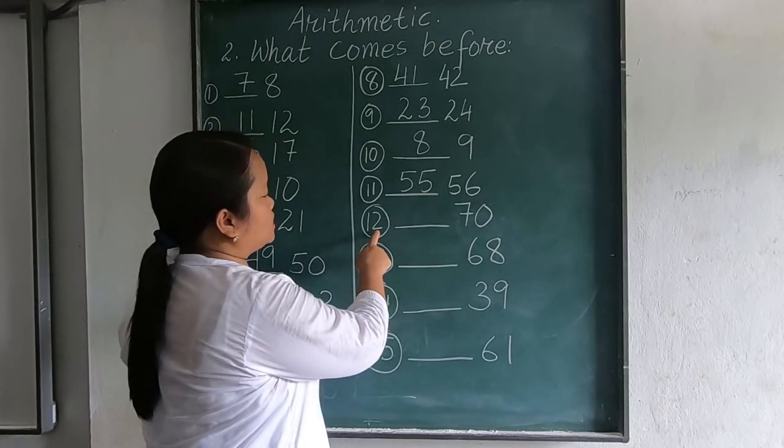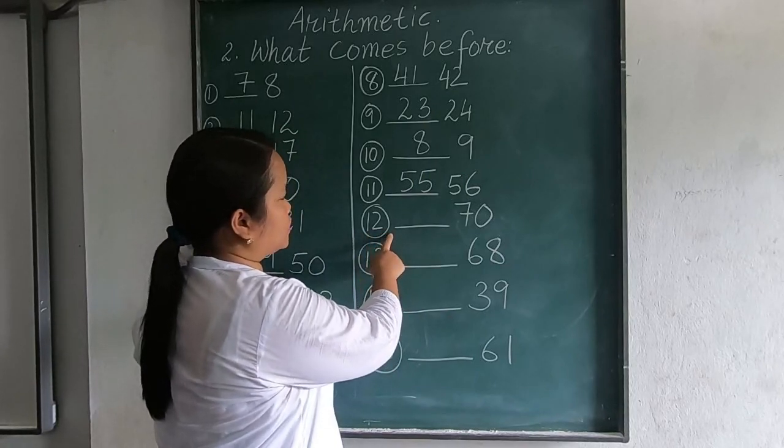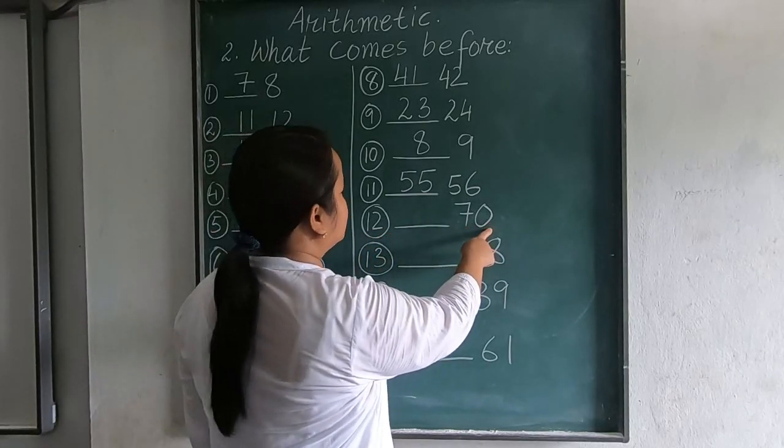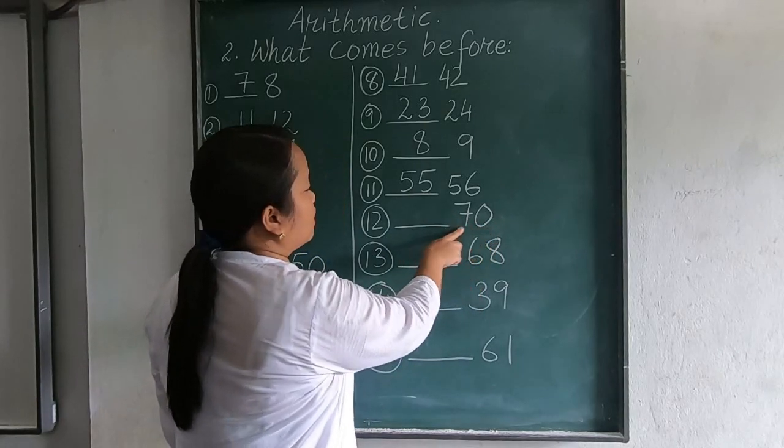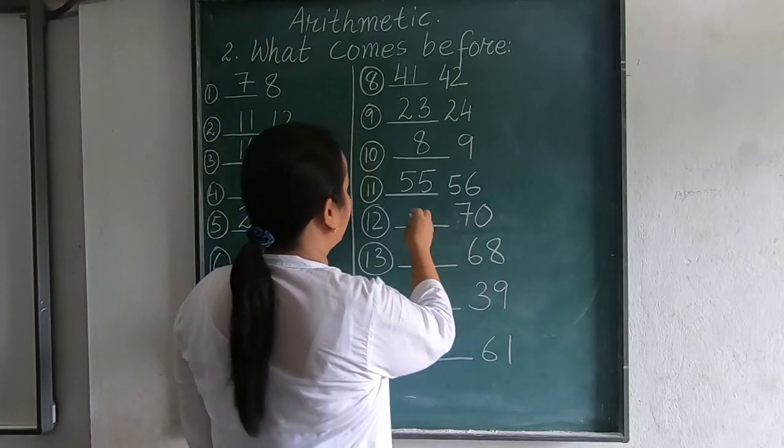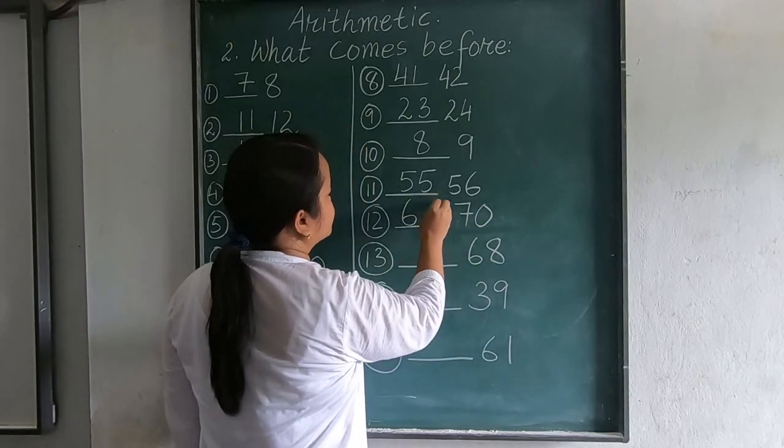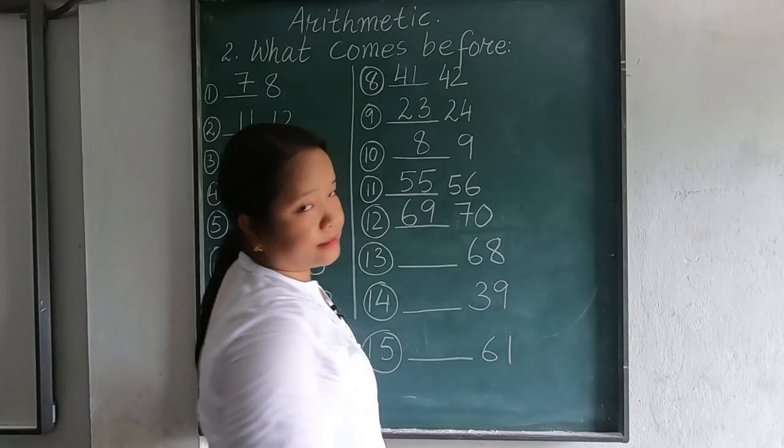Next 12. Question number 12, 70. Before 70, there is 69.